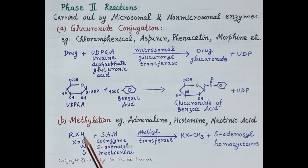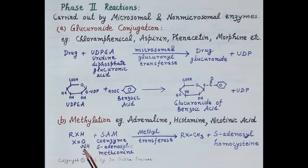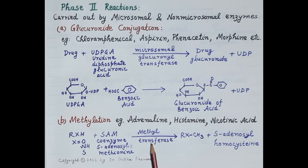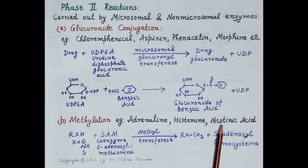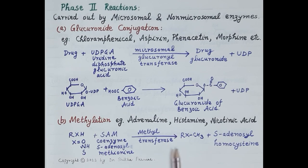Drugs with an OH group, NH2 group, or SH group are methylated by non-microsomal methyl transferase enzyme. The coenzyme S-adenosyl methionine donates the methyl group to the drug. Drugs like adrenaline, histamine, and nicotinic acid are metabolized by the methylation reaction, and the methylated derivative of the drug is excreted in the urine.